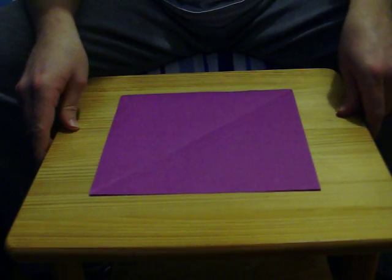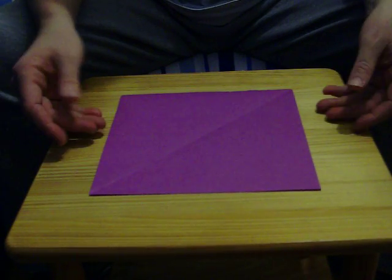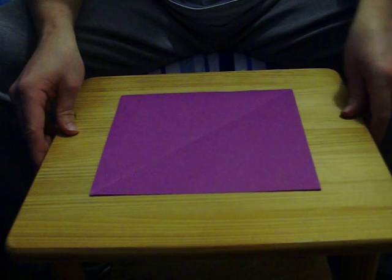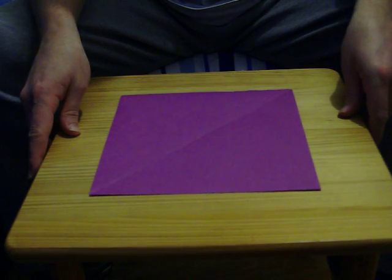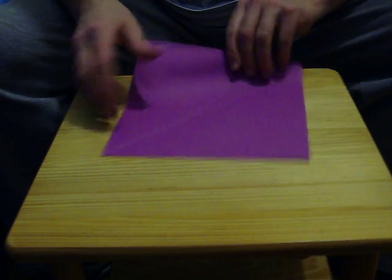Hello and welcome to a very simple origami paper fold. Today I'm going to show you how to make a bobsleigh, which is used to play in the snow. First of all, we'll need a square of paper, any color you like.